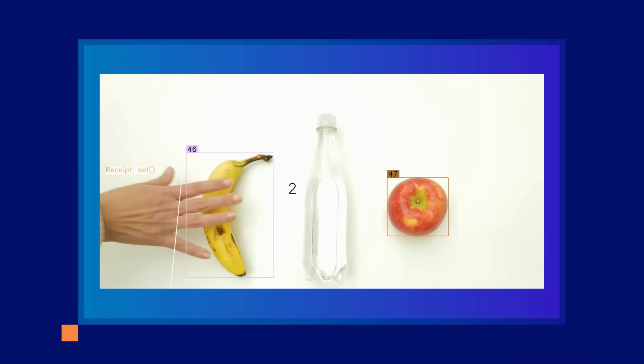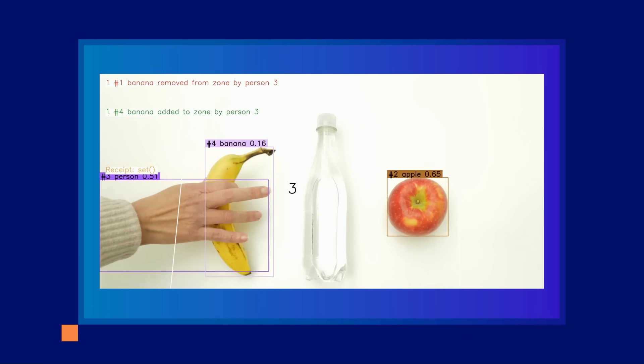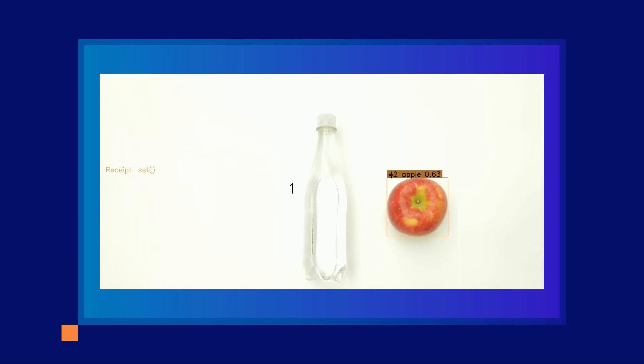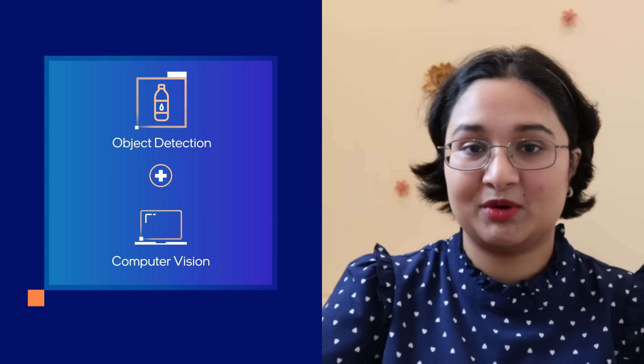Automated self-checkout is an application that typically leverages cameras to detect, track, and monitor objects, particularly retail products, over time. The versatility of this application is so fascinating. There's so many different methods and approaches that you can take using the fundamentals of object detection and computer vision to achieve this problem statement.